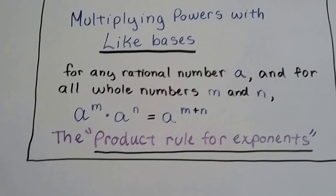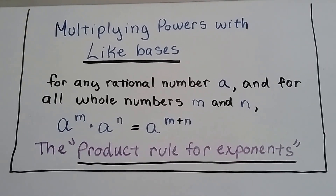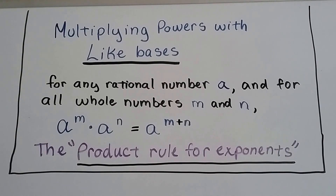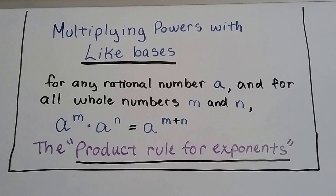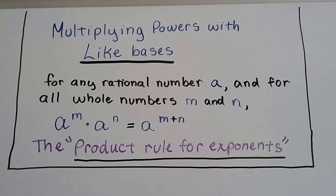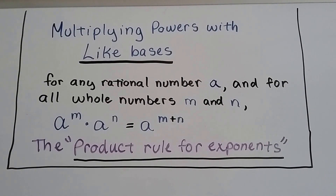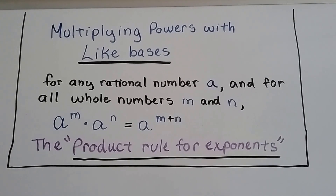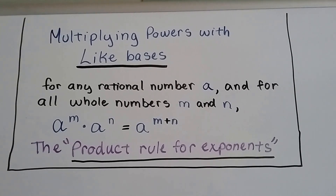Here's the definition and the official product rule of exponents: multiplying powers with like bases. For any rational number a and for all whole numbers m and n, if we have a to the m power and we multiply it by a to the n power, it's going to equal a to the m plus n. The m and n take the place of numbers, and so does the a.